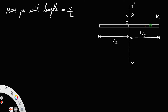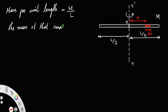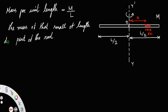Let there be a small element at a distance x from the axis, and let the thickness of this small element be dx. Then the mass of that small part of length dx of the rod is equal to mass per unit length multiplied by the length of that part, which is m/l into dx.